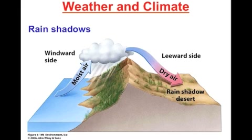Precipitation is a major factor in the study of both weather and climate. Precipitation refers to the water that falls from the atmosphere, regardless of its form — so that can be sleet, snow, rain, or hail. Differences in the amount of precipitation depend on several factors, but are mainly the result of equatorial uplift of moisture.